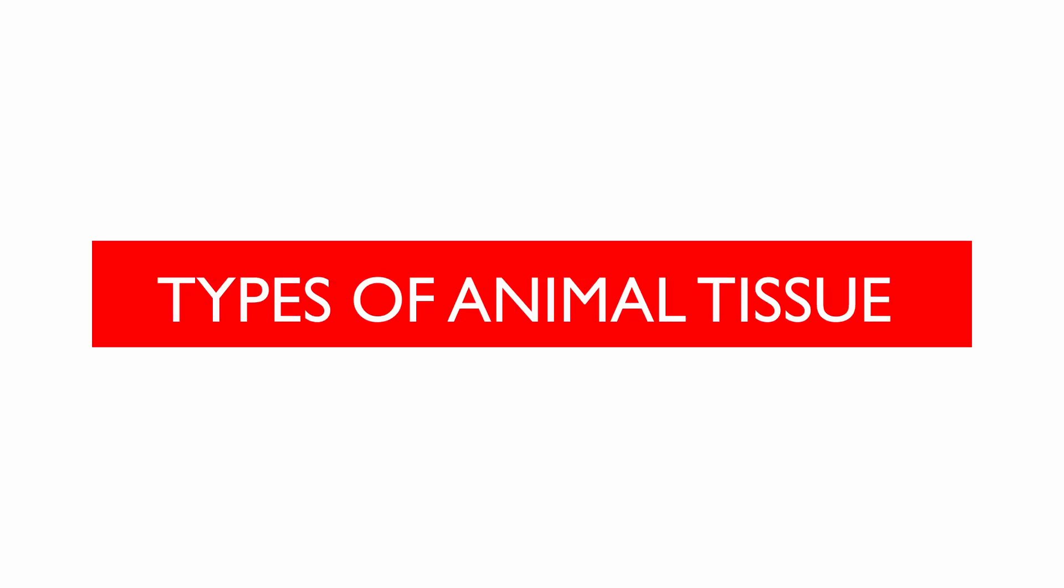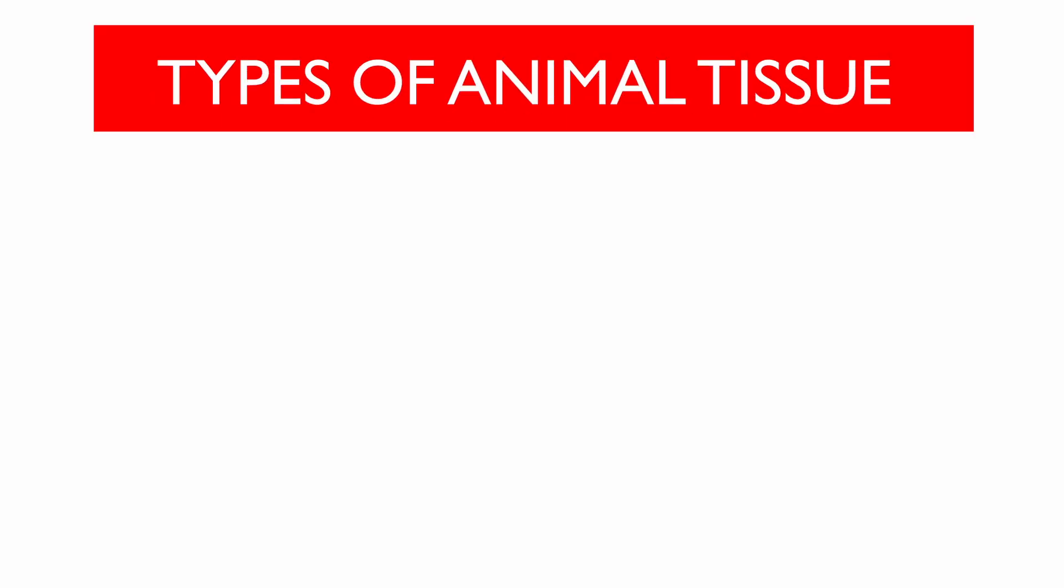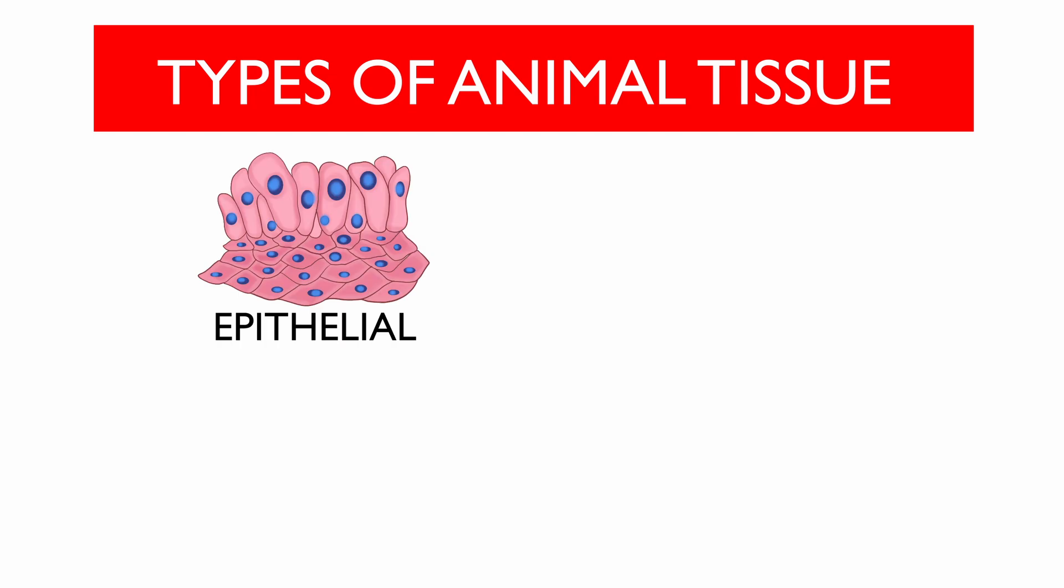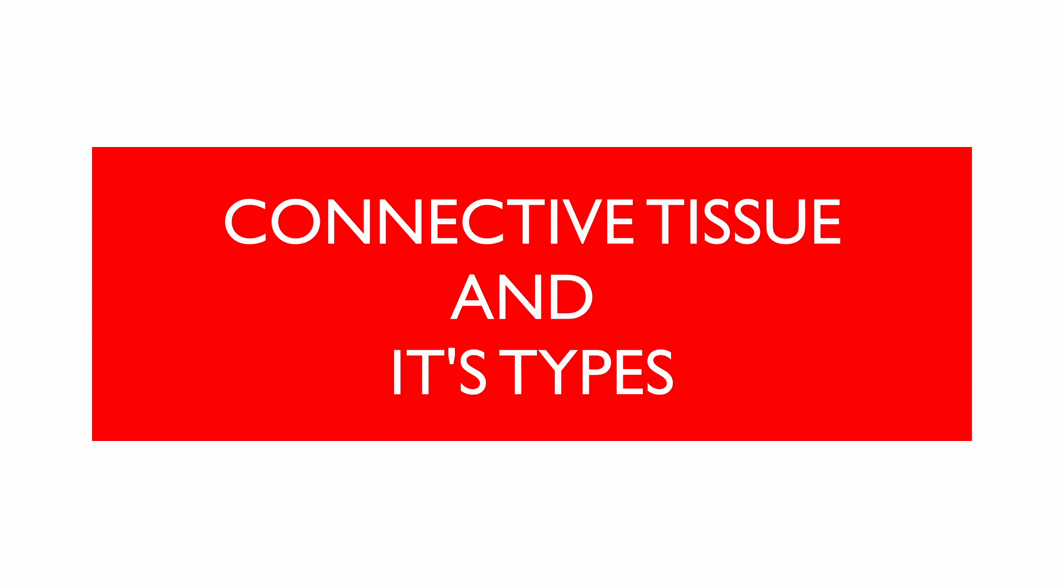In this video, we will look at a type of animal tissue. There are four major types of animal tissues: epithelial, connective, muscular, and nervous. The focus of this video will be connective tissue and its types.